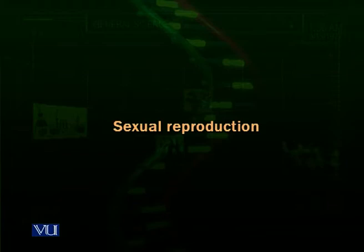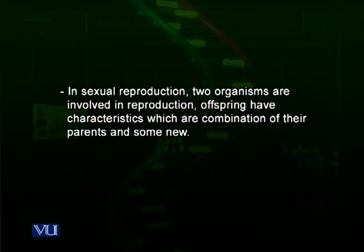Sexual reproduction is more advantageous and is present in higher forms of life. It is a process which involves two organisms — one typically called a male and another typically called a female — and there is an involvement of specific cells called gametes.